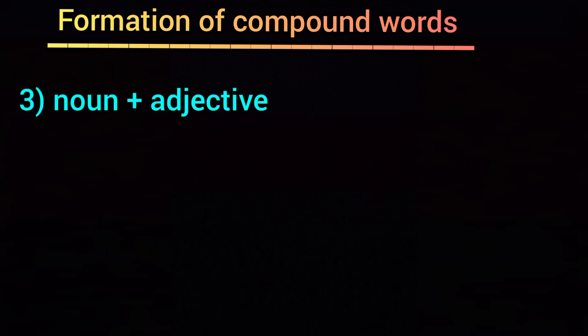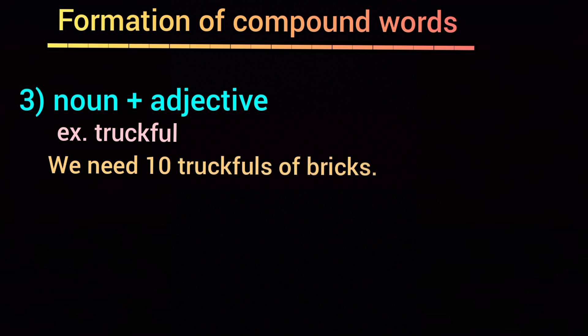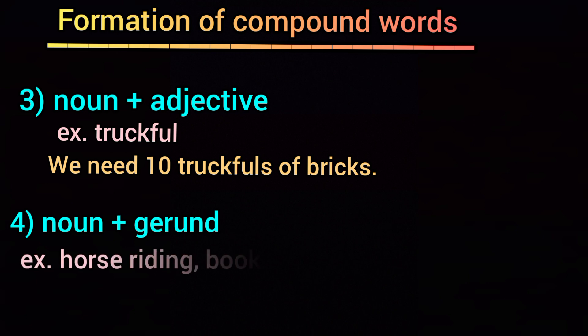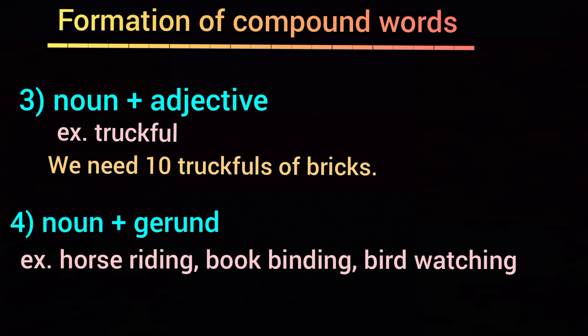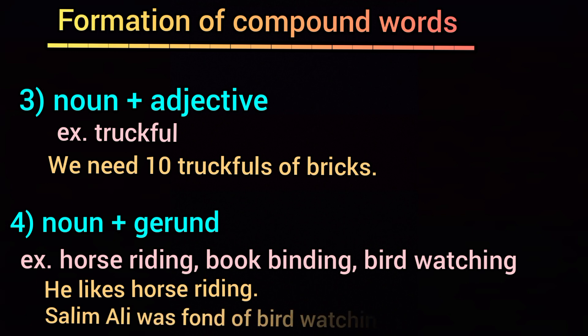Third is noun plus adjective — for example, truck full, where truck is a noun and full is an adjective. 'We need 10 truck-full of bricks.' Fourth is noun plus gerund — for example, horse riding, book binding, bird watching. Here the first word is a noun and the second is a gerund — the ing-form of a verb used as a noun. 'He likes horse riding.' 'Salim Ali was fond of bird watching since childhood.' These are open compound words.